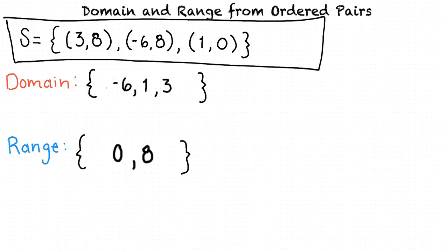That all makes sense. So to summarize: the domain is the set of the first elements in the ordered pairs of the relation, and the range is the set of the second elements in the ordered pairs of the relation. Good work — you definitely understand this topic.